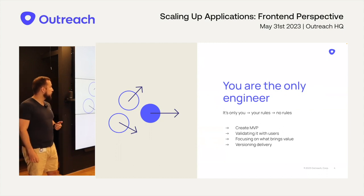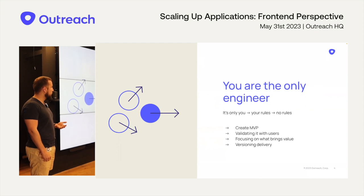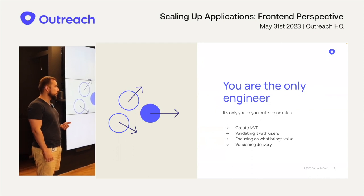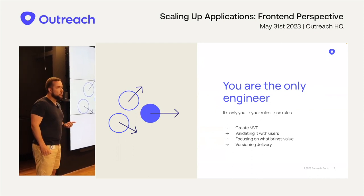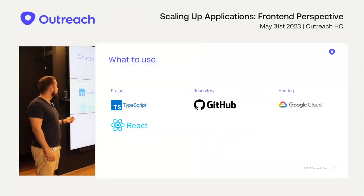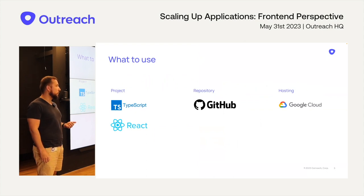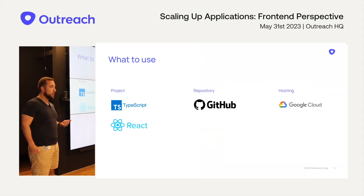For versioning or deploying to users, for now I will use simple versioning where you just create a version from your branch and upload it to a host. For example, I will use TypeScript for this project, React, a GitHub repository, and Google Cloud Platform because it's easy to create a domain and upload a new version of the code really fast.